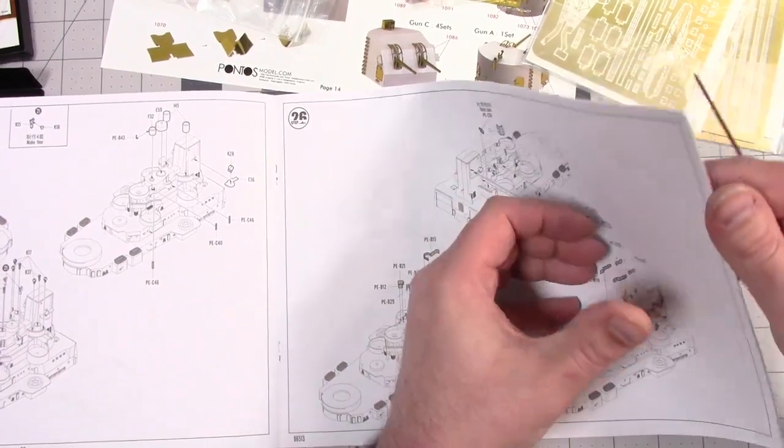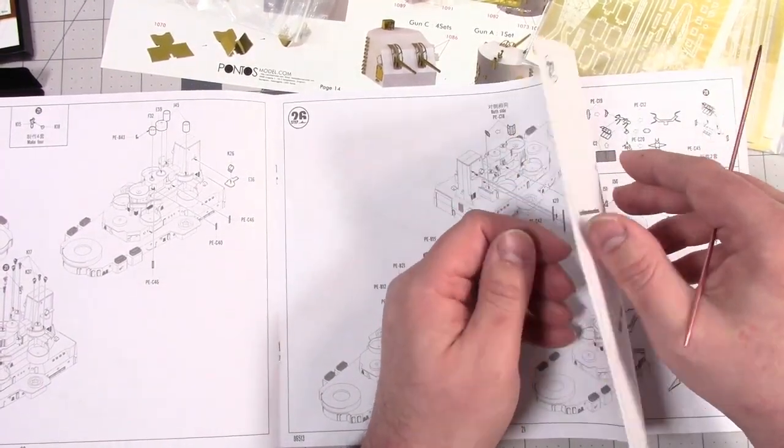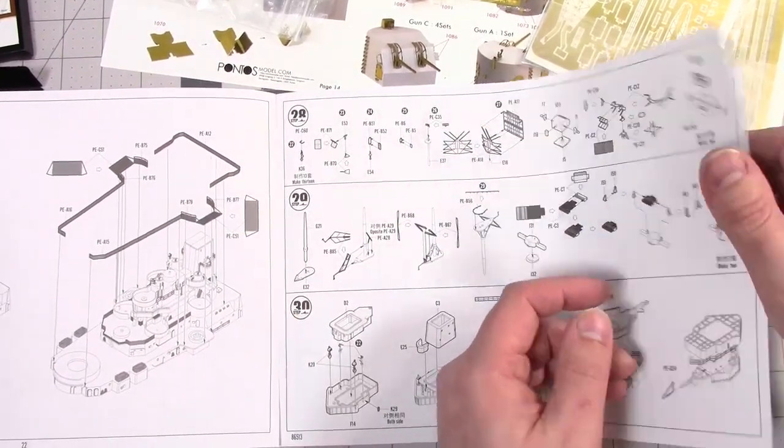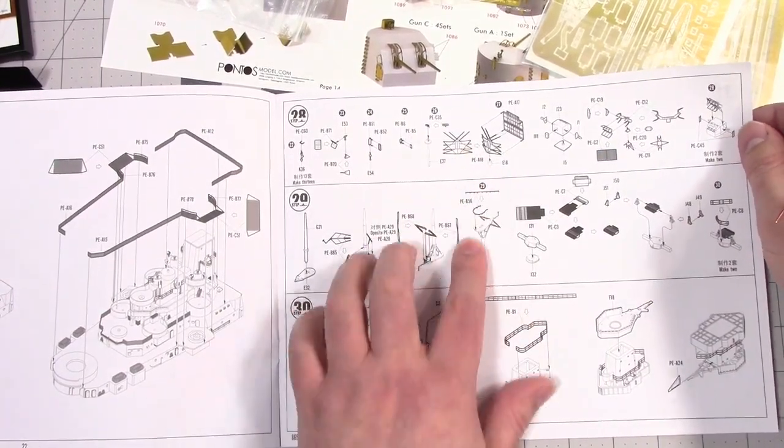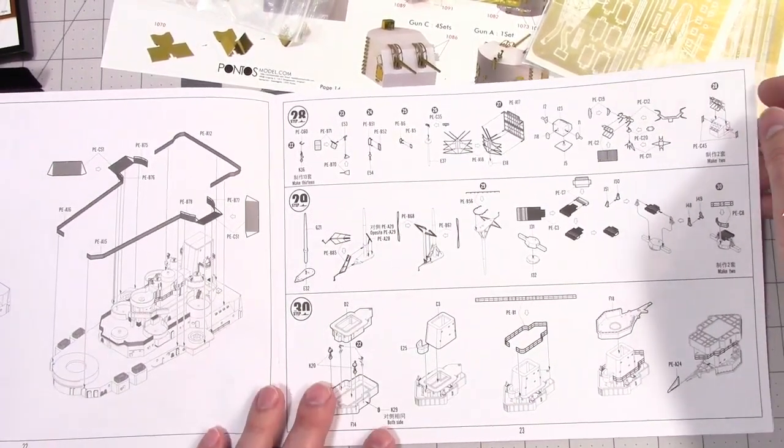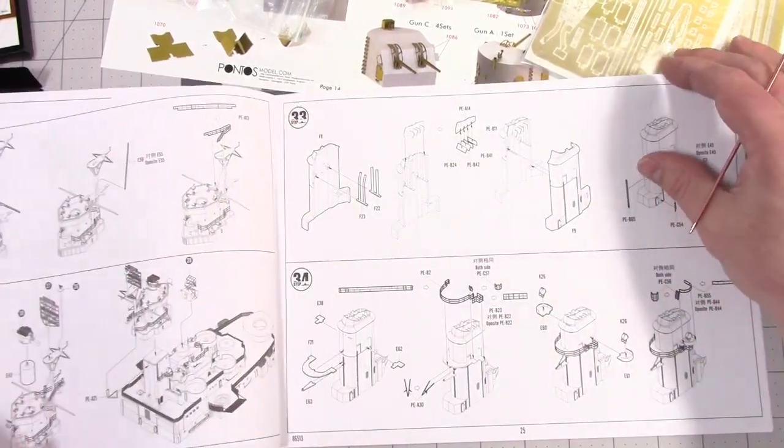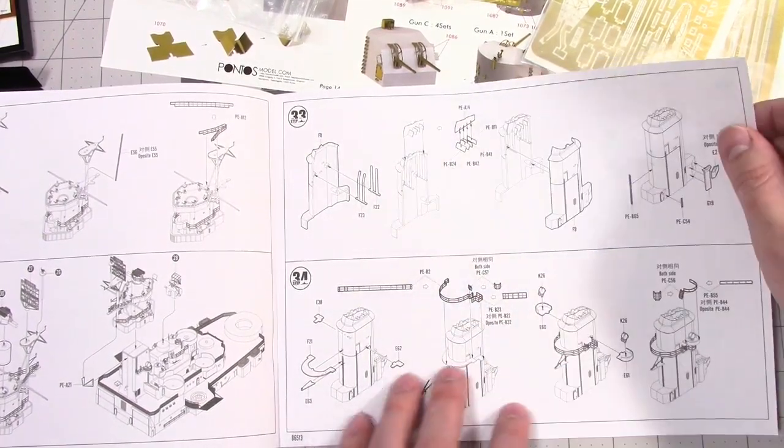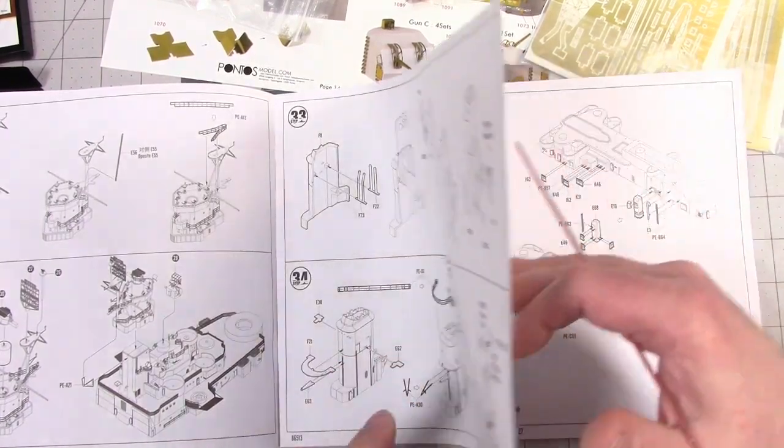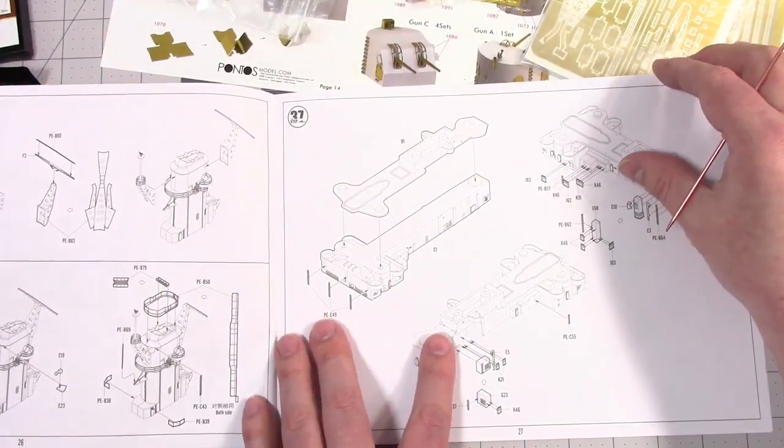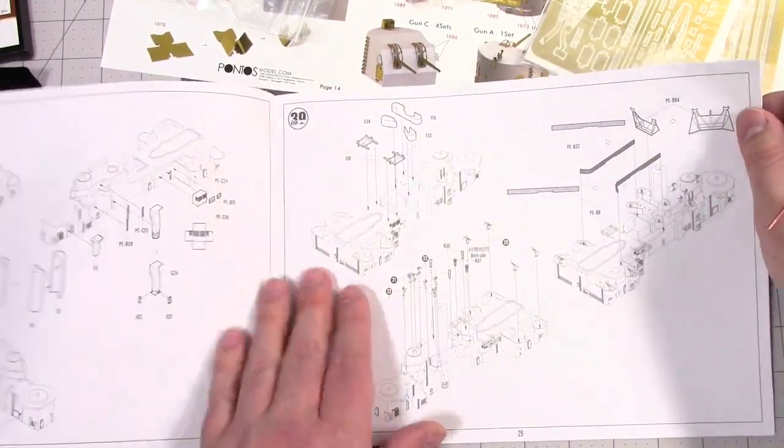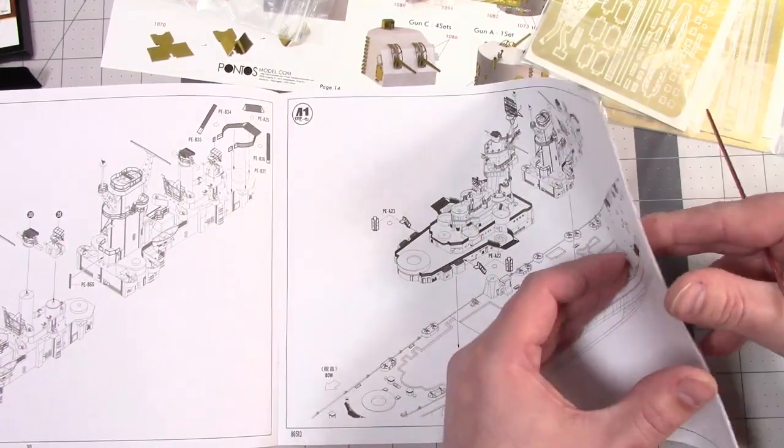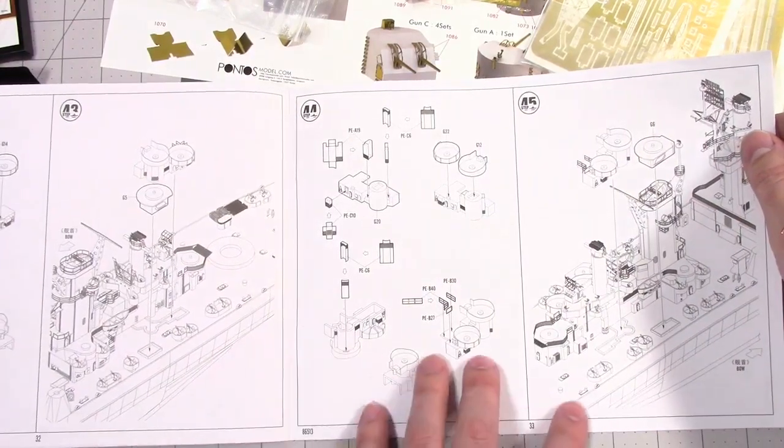Now here's radars, some of these are in PE and then my radar kit may be more detailed and I'll use that instead. So then we have the funnel. There's detail missing from the funnel and when I get to that I'll show you what it's missing and I actually have parts to make it correct. It's not that far off, it's just missing a couple things. So more of the island superstructure. So there's two of those. So here's it actually going on the ship and then more gun emplacements.